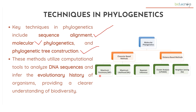In molecular phylogenetics we have character-based methods and distance-based methods. Character-based methods include maximum parsimony, maximum likelihood, and Bayesian inference, which help with character-based phylogenetic analysis. Distance-based methods help us with cluster analysis using the UPGMA method and neighbor joining (NJ) method. These are the methods available through bioinformatics databases.